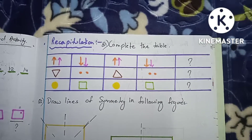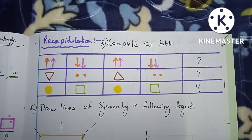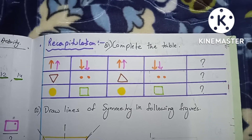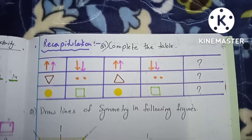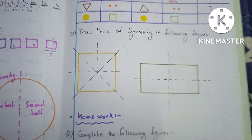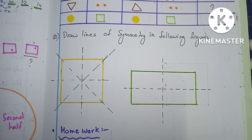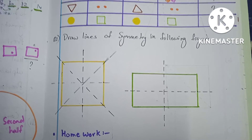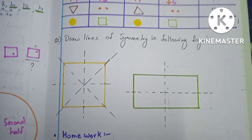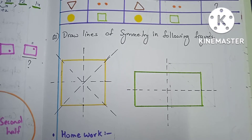Now we come to the recapitulation of the chapter. For this I have given students some examples and asked what type of pattern will come next. Then we have given some lines of symmetry to draw and told them to determine whether the figures are symmetric about a particular line.